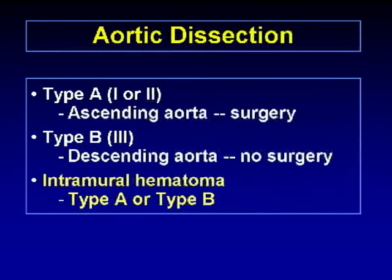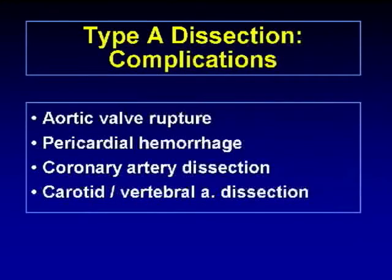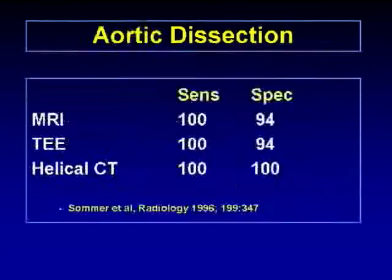Whenever we see an intramural hematoma — a disease in the spectrum of dissection — we can also classify it as type A or type B, with similar management to dissection. Complications of type A dissection include aortic valve rupture, pericardial hemorrhage, coronary artery dissection, and carotid and vertebral artery dissection. We perform cardiac gating in all dissection studies to clearly evaluate the aortic valve and coronary arteries. An old study from 1996 already showed helical CT achieves 100% sensitivity and specificity for aortic dissection compared to MR and transesophageal echo.